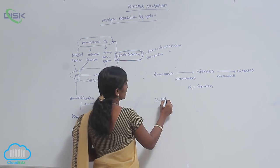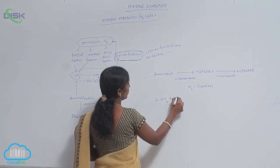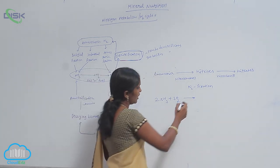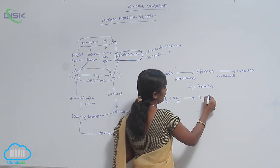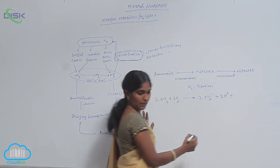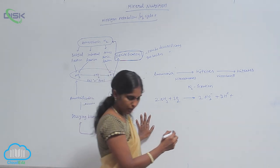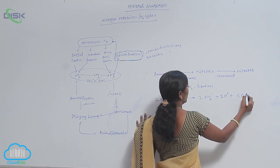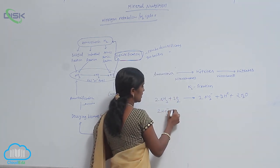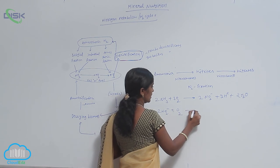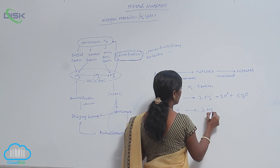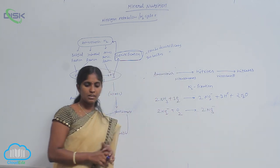2NH3 plus 3O2 gives rise to 2NO2 minus plus 2H plus plus 2 water molecules. And 2NO2 minus plus 1 oxygen can produce 2NO3 minus. Nitrates are produced.